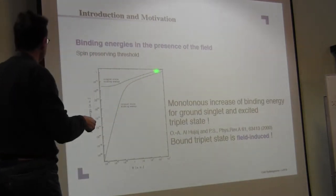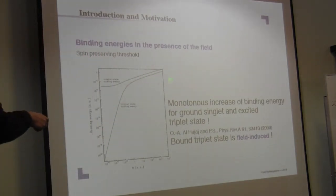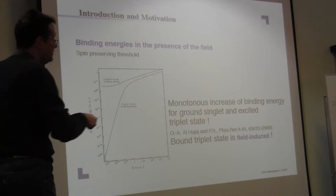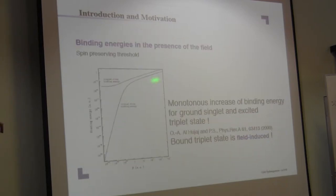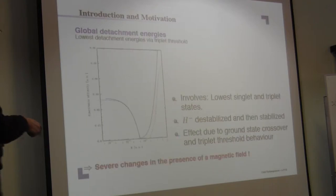Then also you see that the binding energies change severely. This is the singlet state binding energy. This is the triplet state binding energy. So you see there's huge changes in the binding energies with changing magnetic field. There's even here some triplet binding induced by the magnetic field.